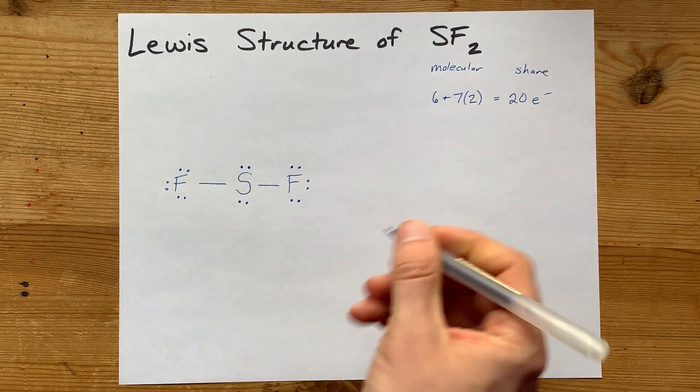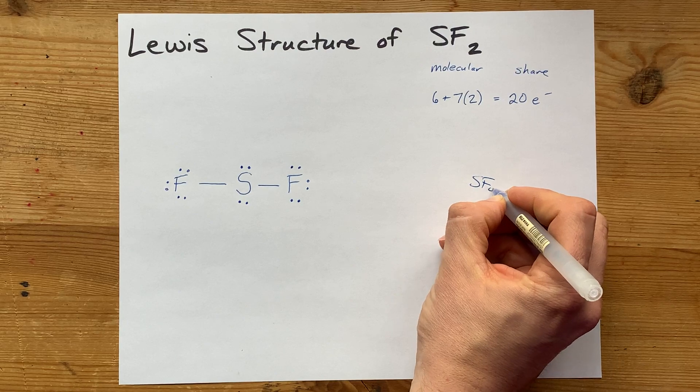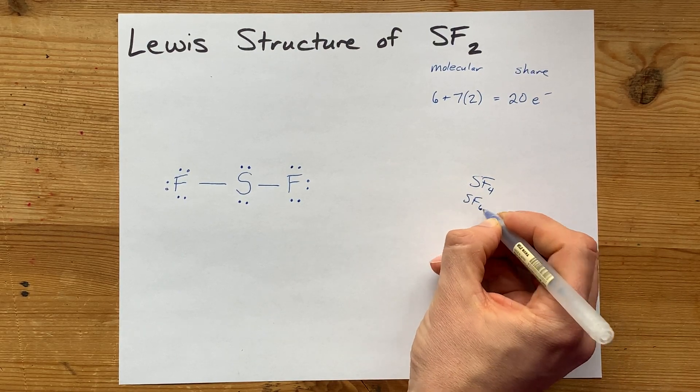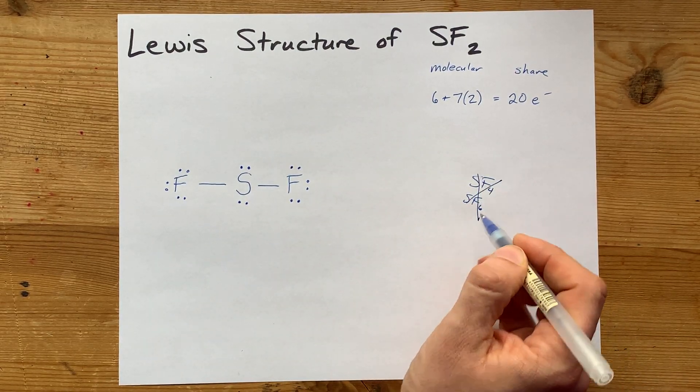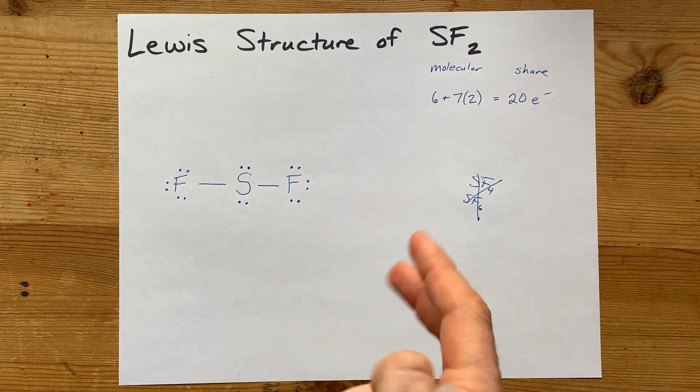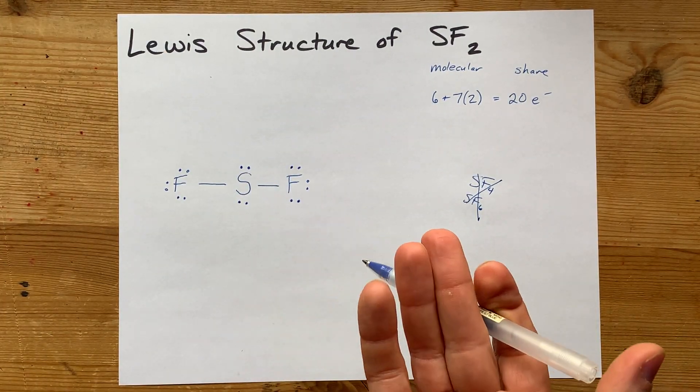I want to point out that sulfur in molecules like SF4 and SF6 violate the octet rule by having 10 or 12, an expanded octet. But this one does not.